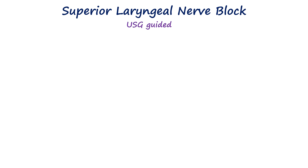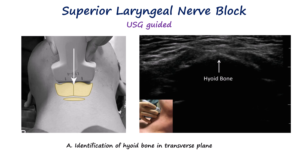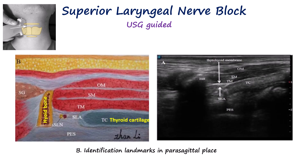Sometimes it can be difficult to identify the landmarks, for example in obese patients, when trying to perform this block. Ultrasound can therefore be used to facilitate deposition of local anesthetic in the correct place. The patient lies supine with the neck slightly extended, and a high-frequency linear probe is placed across the neck at the level of the hyoid bone, which appears as a bright curved line with a shadow underneath. The probe is then positioned in a parasagittal orientation just lateral to the midline. In this view, the structures visible from anterior to posterior are the omohyoid muscle, sternohyoid muscle, thyrohyoid muscle, and then the thyrohyoid membrane. Deeper to that is the pre-epiglottic space. The superior laryngeal artery may sometimes be seen here as well, but it is small and not always visible.